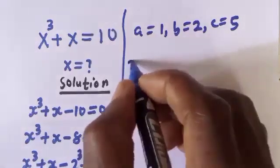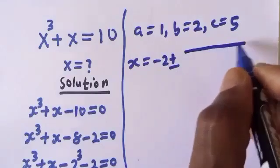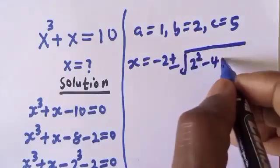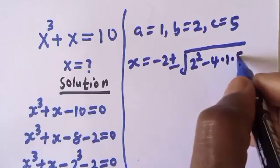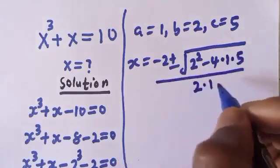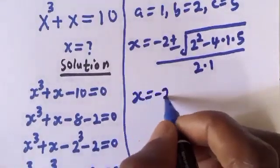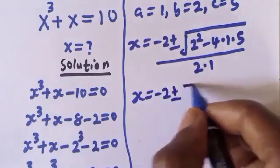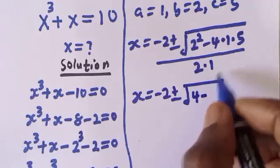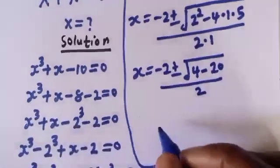Then we have s is equal to minus 2 plus or minus square root of 2 squared minus 4 multiplied by 1 multiplied by 5, over 2 multiplied by 1. So this is s equal to minus 2 plus or minus square root of 4 minus 20, over 2.